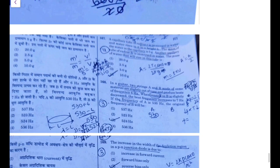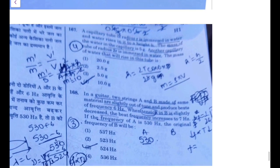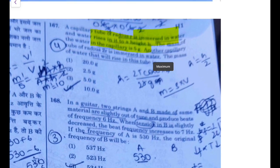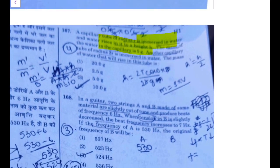This is option 1, correctly marked. Next: capillary tube of radius r is immersed in water and water rises up to a height h. The mass of the water is 5 grams. Another capillary tube of radius 2r is immersed. The mass of water that will rise is what?